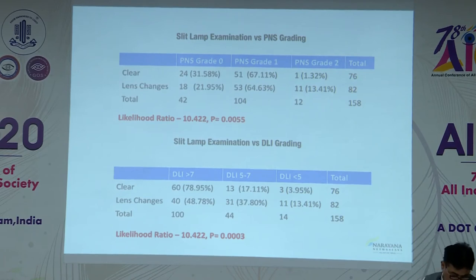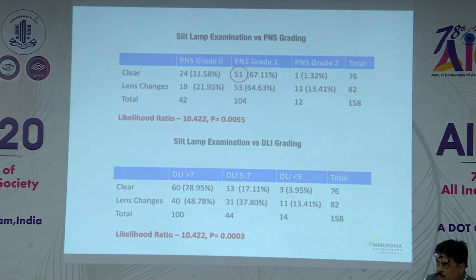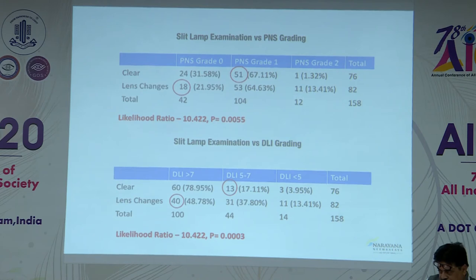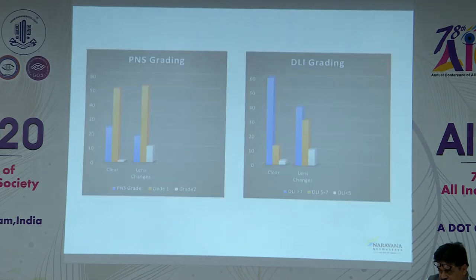Comparing slit lamp examination with PNS grading: of 76 cases graded as clear on slit lamp, the Pentacam gave grade 1 in 51 patients. Of 82 patients with early lens changes on slit lamp, the Pentacam gave grade 0. On the i-Trace, of the 76 clear cases, DLI between 5 and 7 was found in 13 cases and the majority had DLI more than 7. Of the 82 patients with lens changes on slit lamp, 40 cases were given DLI more than 7.